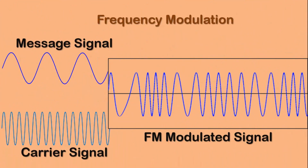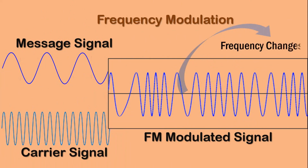Similarly, in case of frequency modulation, the frequency of the carrier signal changes according to the message signal. When the amplitude of the message signal increases, the frequency of the modulated signal will also increase, and with decreasing amplitude of the message signal the frequency of the modulated signal also decreases.